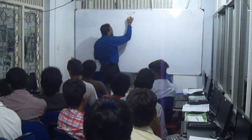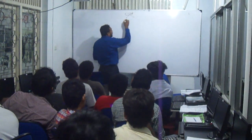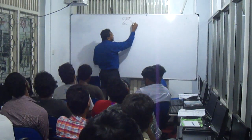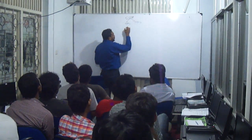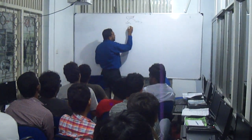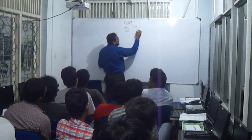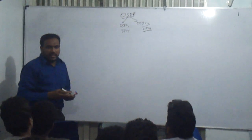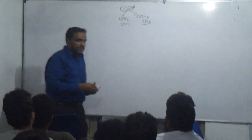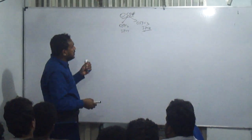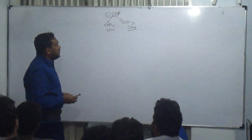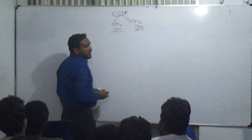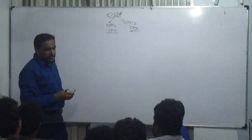OSPF has two versions: OSPF version 2 and OSPF version 3. Version 2 is for IP version 4, and version 3 configuration is for IP version 6. We will see IP version 6 configuration in tomorrow's class, and today we will see IP version 4 in detail.